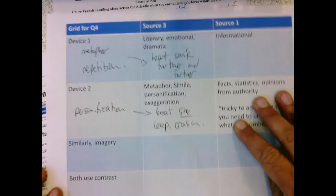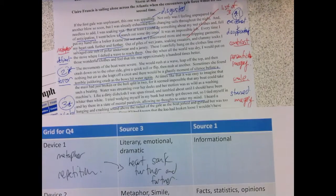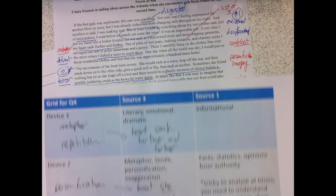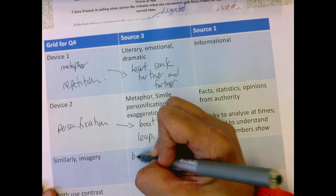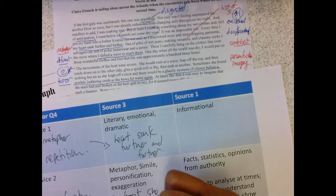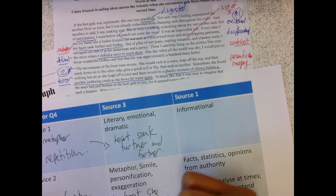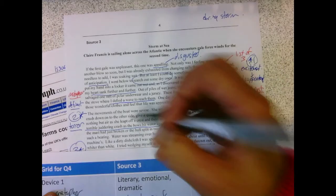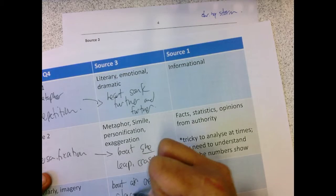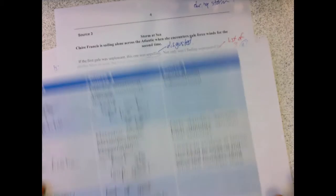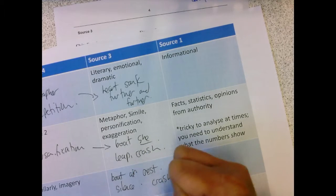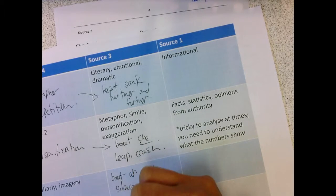Similarly, there's imagery in Source 3. Imagery of the, I think, the boat in the air off a crest here. Ah, and then the silence, and then the crash. That's a fantastic image. The contrast is, of course, the sunny ending with the storm. Okay?